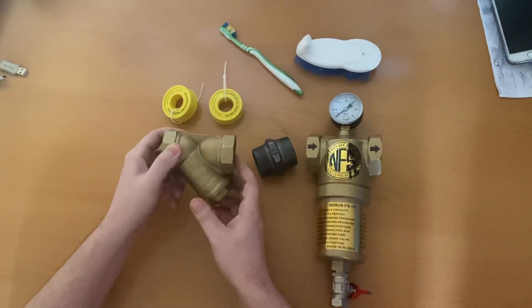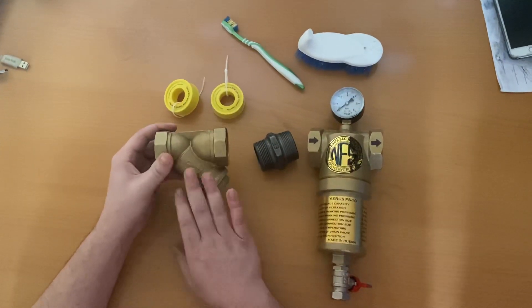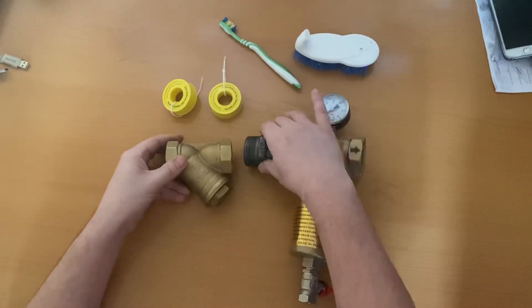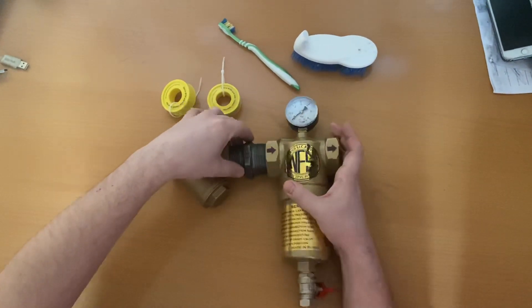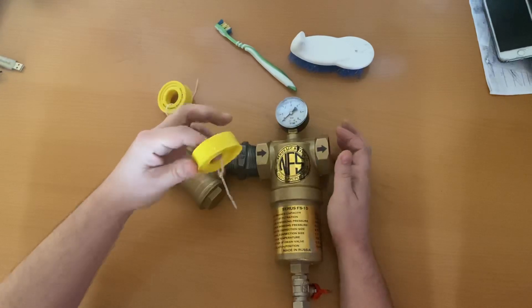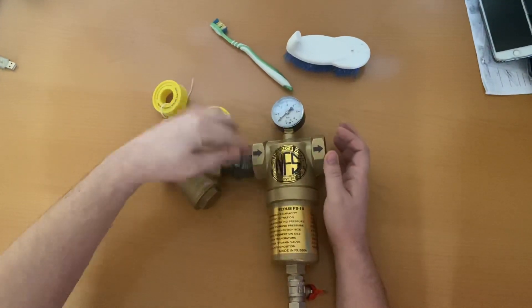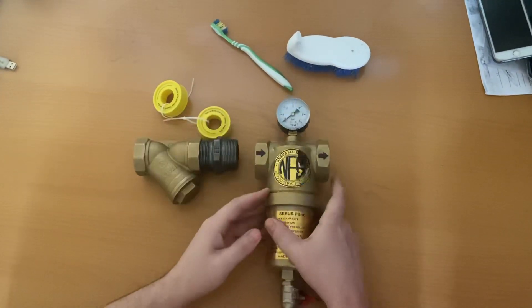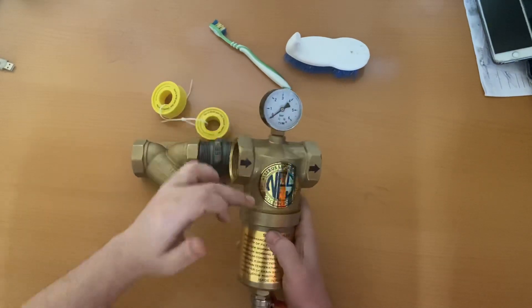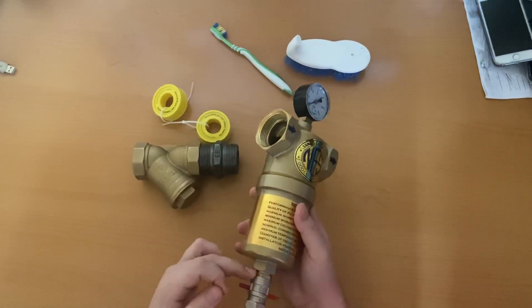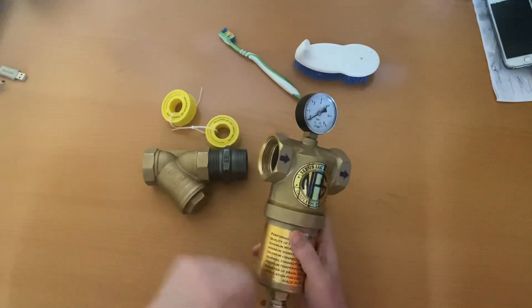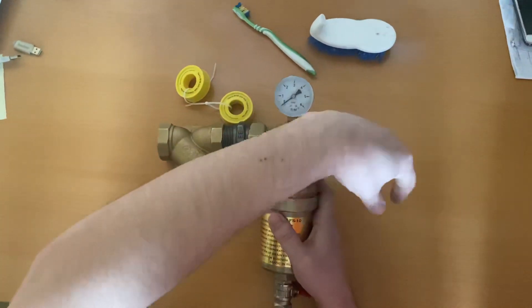Now, from the strainer to the filter, you have this connection. You connect them like this. Use the teflon tape on all the connections, also on the manometer connection and the drain valve connection. Put the teflon tape everywhere, on the exit and entrance.